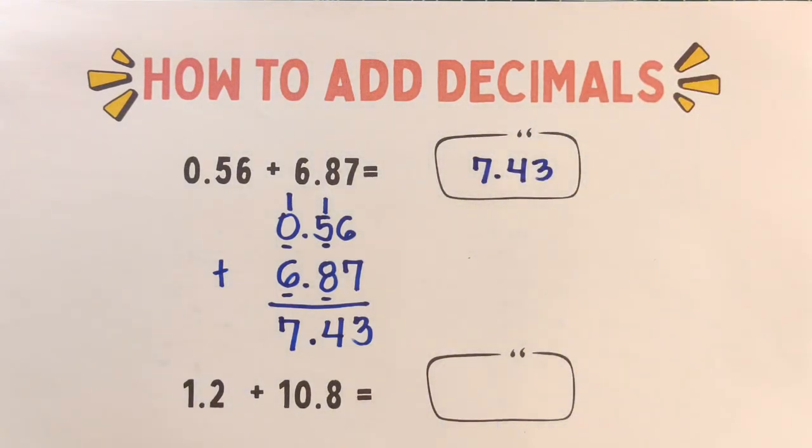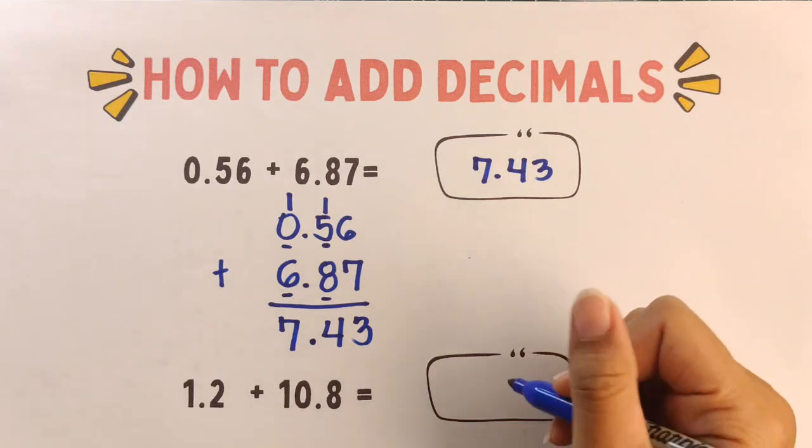For the last example, we have 1.2 plus 10.8. Now it's your turn to answer this.